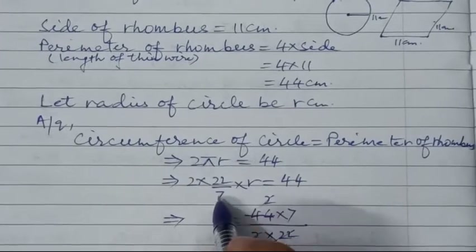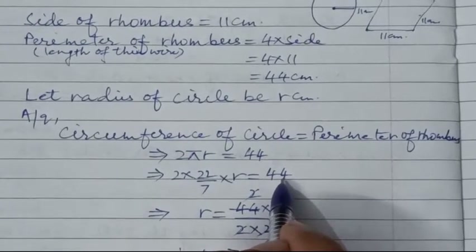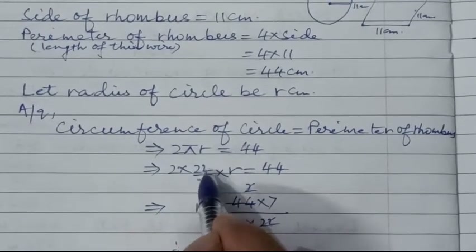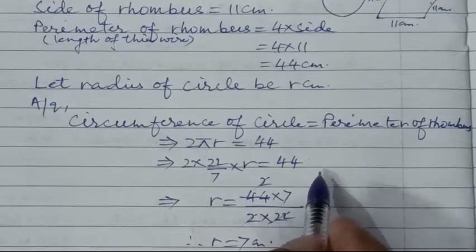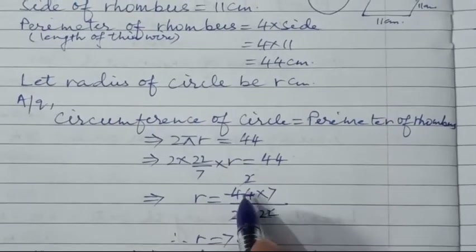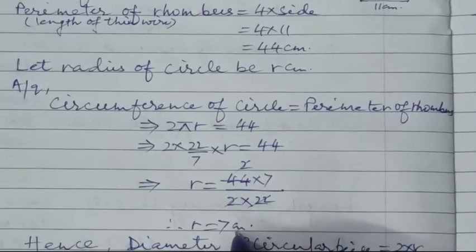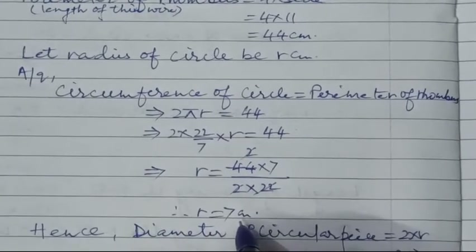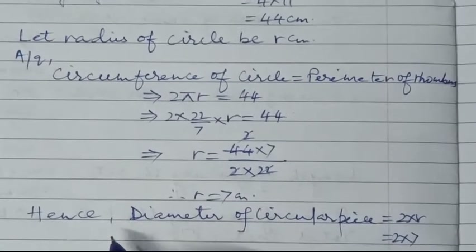According to the question, circumference of circle = perimeter of rhombus. So 2πr = 44. Substituting π = 22/7: 2 × (22/7) × r = 44. Cross multiplying, r = (44 × 7) ÷ (2 × 22) = 7 cm. Therefore radius r = 7 cm.